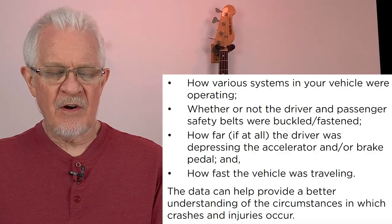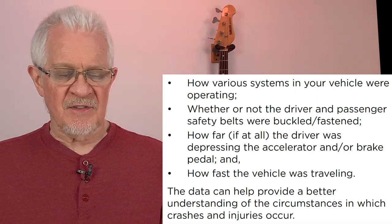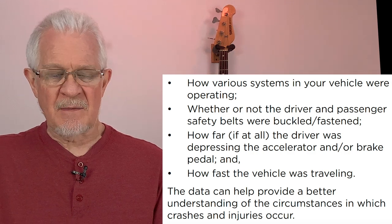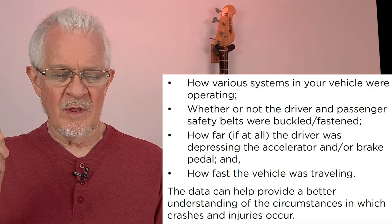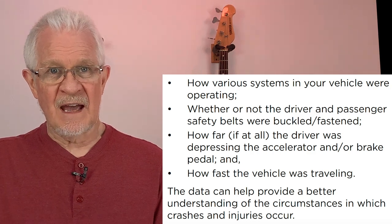It's frustrating when the data goes against us, but here we go. Some of the data collected includes how the various systems in your vehicle were operating at the time of the accident, whether or not the driver and passenger safety belts were buckled, how far the driver was depressing either the accelerator or the brake pedal, and how fast the vehicle was traveling. The data can help provide a better understanding of the circumstances in which crashes and injuries occurred. The electronic modules in your car are monitoring all of these systems at all times, feeding that information into the EDR, ready for use at a future time.